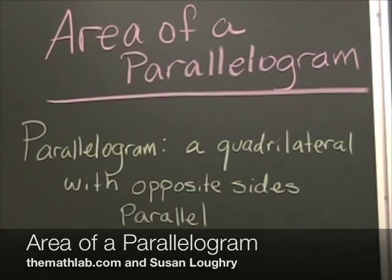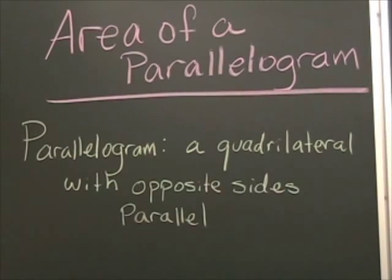A parallelogram is a quadrilateral, and that means it's a polygon with four sides and the opposite sides, both pairs of them, are going to be parallel. And of course that means they never meet, they run neck and neck together like railroad tracks.